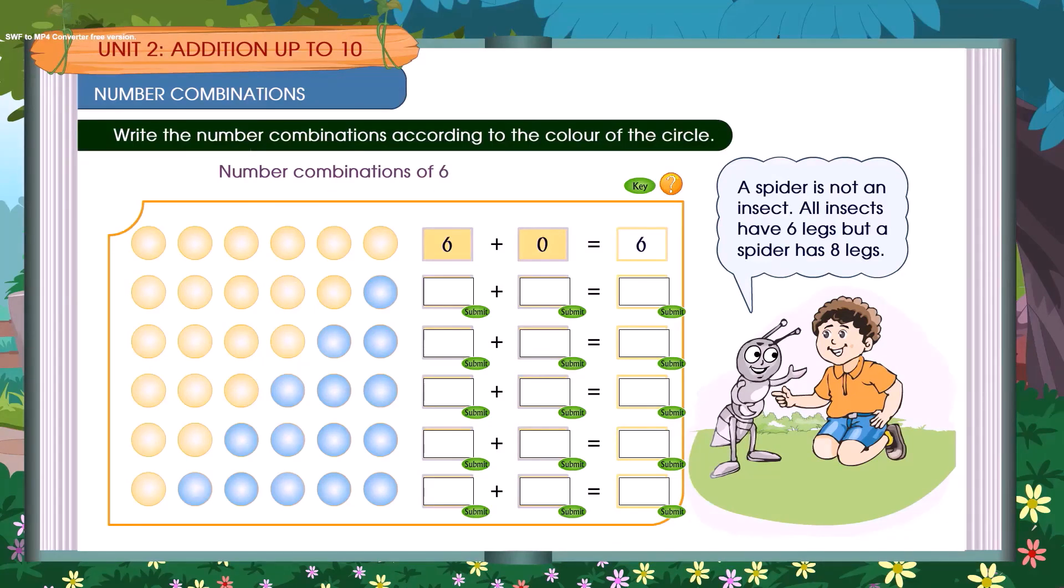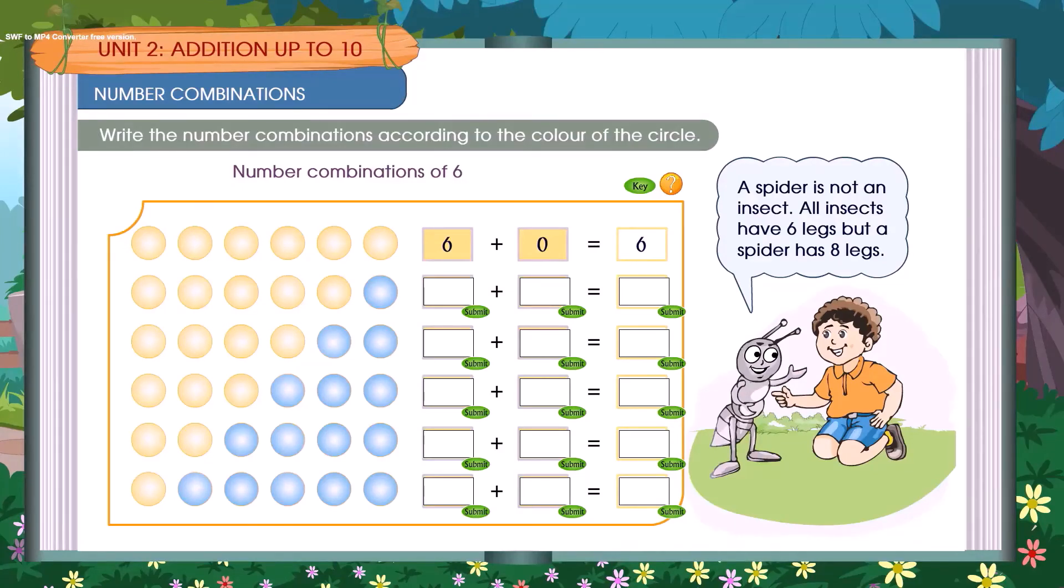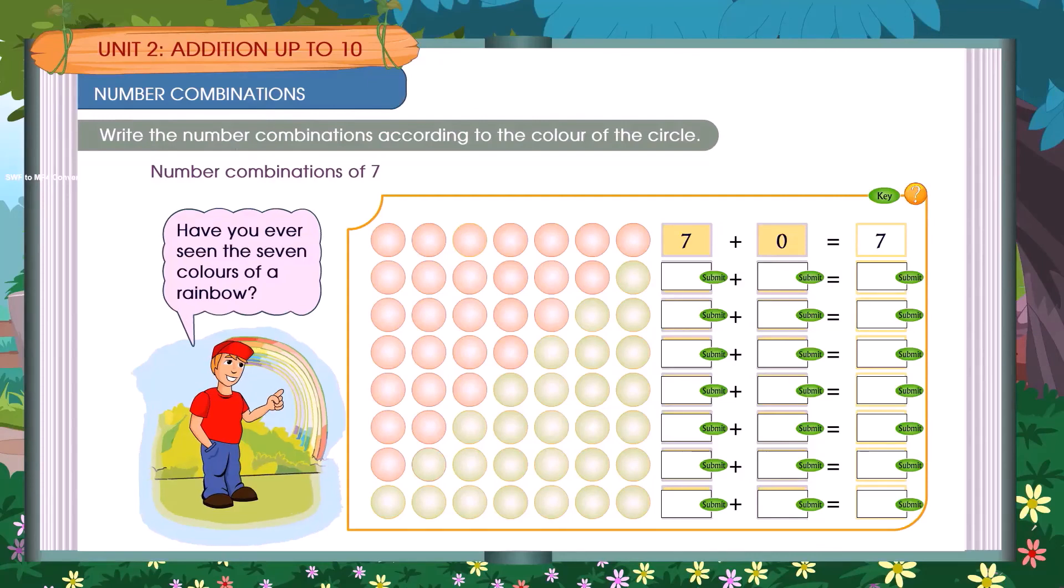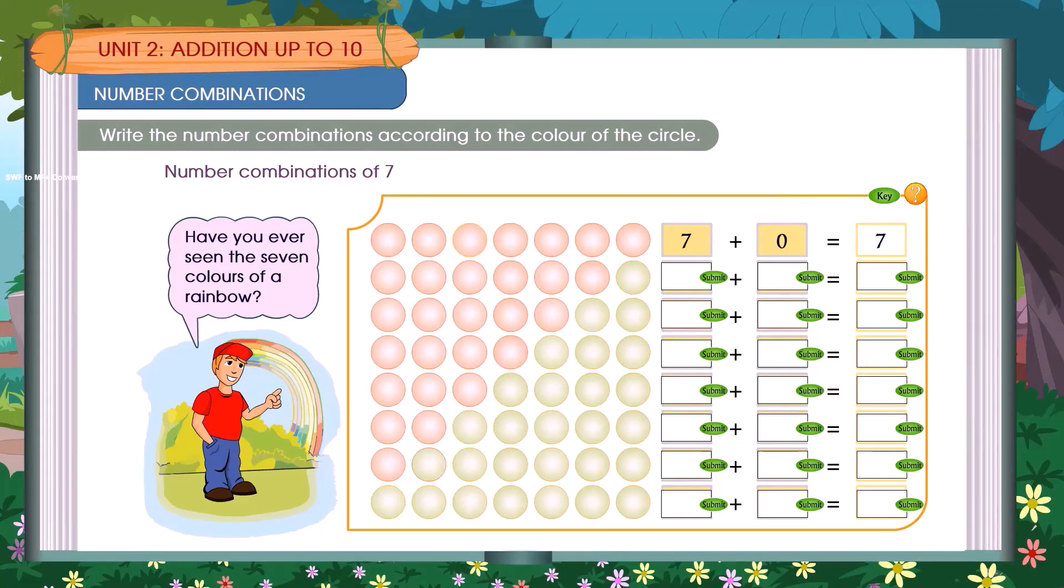Write the number combinations according to the color of the circles. Number combinations of 6.